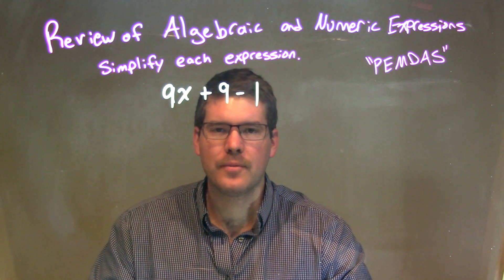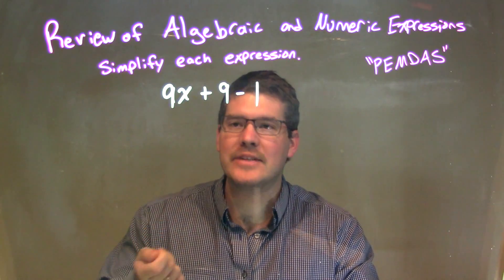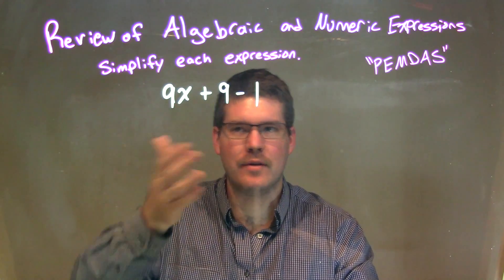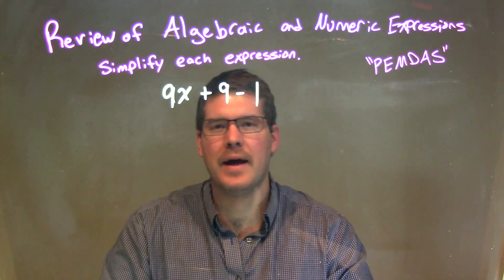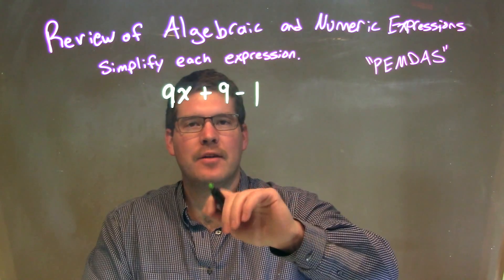Well, what we're going to do is combine our like terms. I only see 9x by itself. There's only one variable, so I don't really worry about that. Now I have my numbers, 9 minus 1.